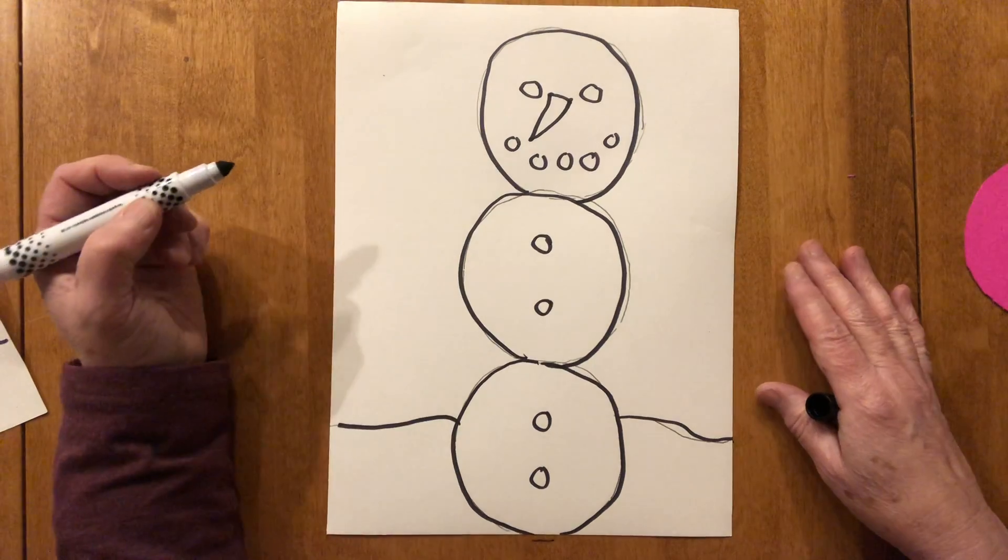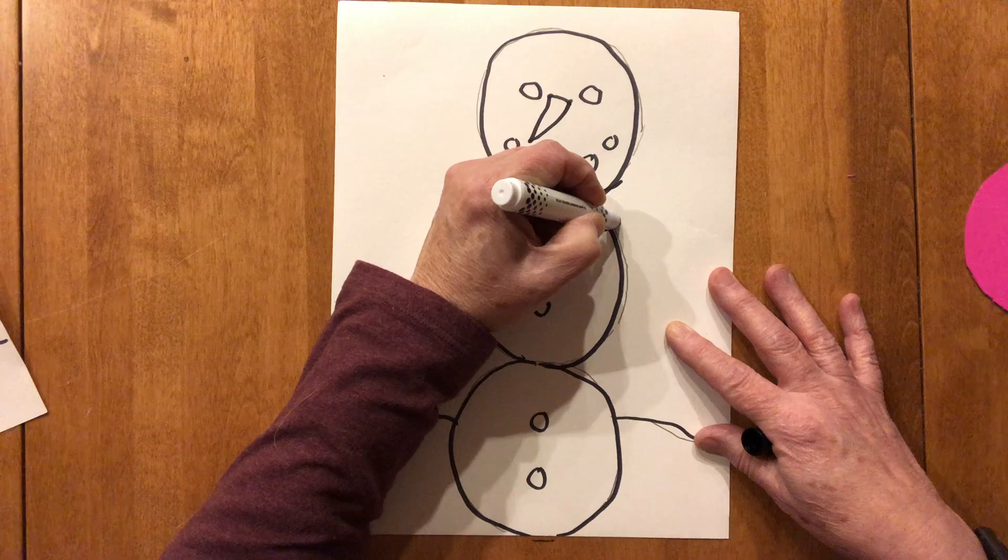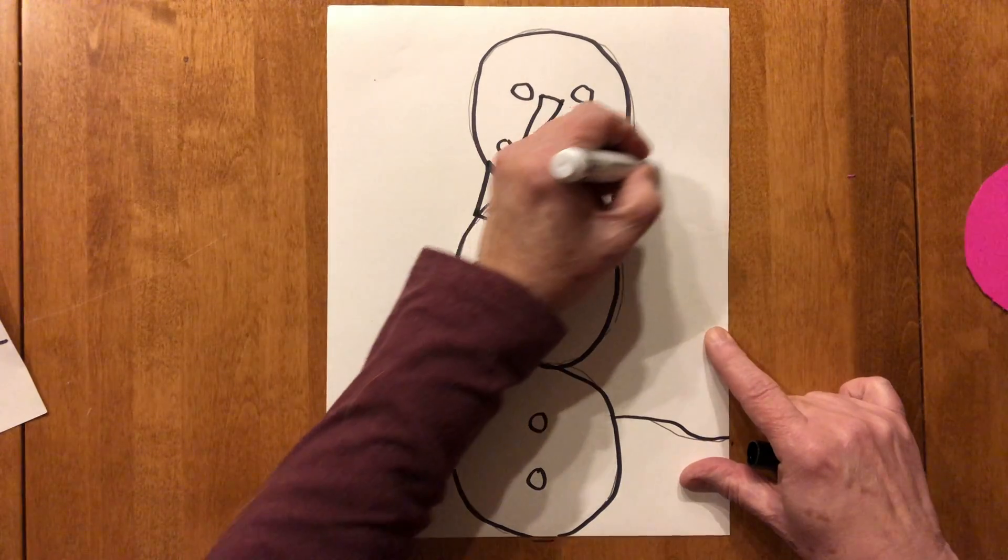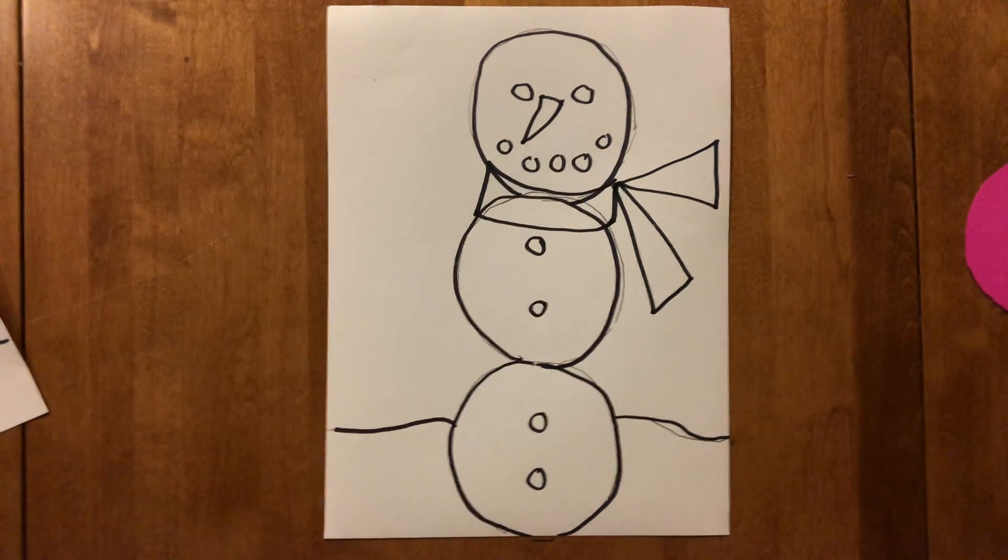So I'm going to add a few things first. I'm going to add its scarf. So think about how you want to draw your scarf. I'm going to draw a little rectangle like that and then two triangles coming off for my snow person's scarf.